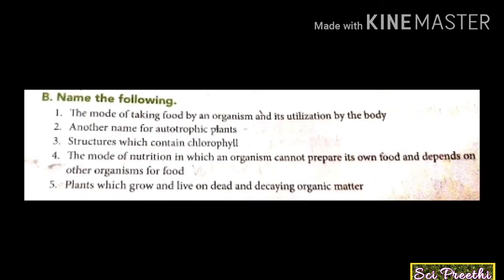Now we discuss: name the following. First: the mode of taking food by an organism and its utilization by the body — nutrition. Second: another name for autotrophic plants — producer. Third: structures which contain chlorophyll — chloroplast. Fourth: the mode of nutrition in which an organism cannot prepare its own food and depends on other organisms — heterotrophic nutrition.